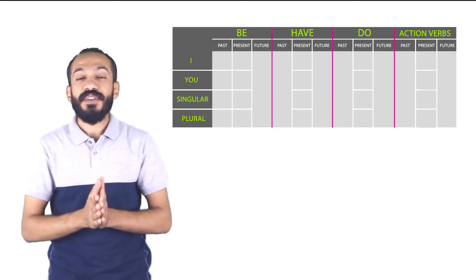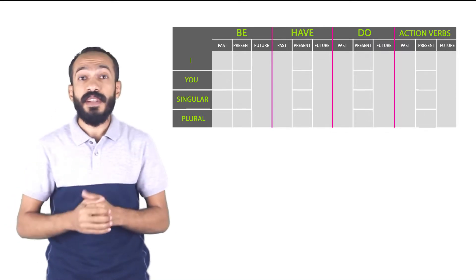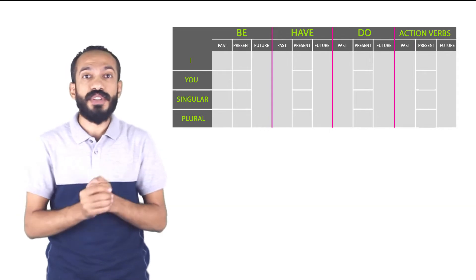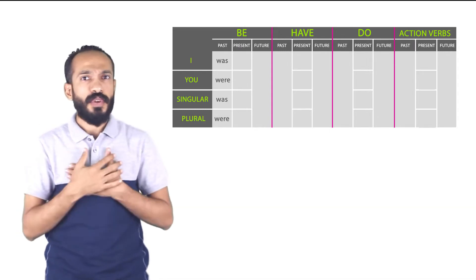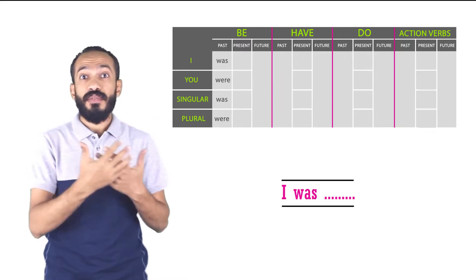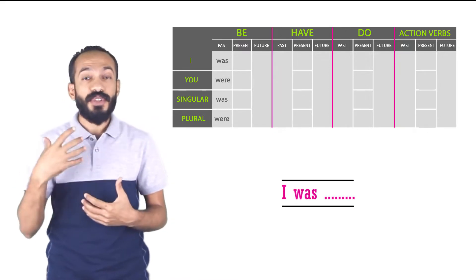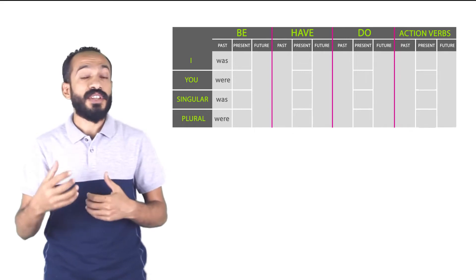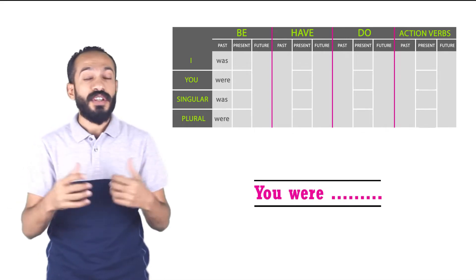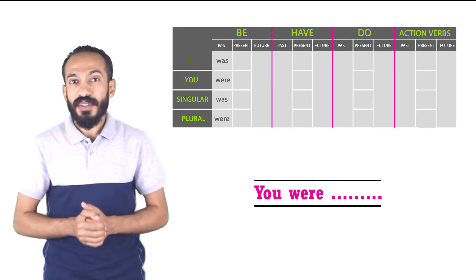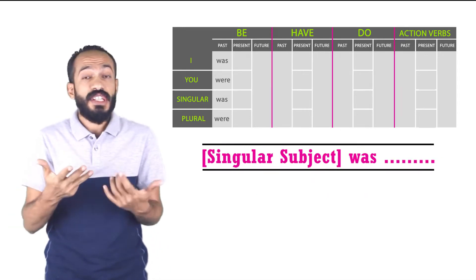We're going to get started with verb to be. In the past, if you want to use verb to be in the past, we're going to use two different words: was or were. When I talk about myself, I say 'I was.' When my subject is the pronoun you, then the verb is always 'you were.' If your subject is singular — that, this, he, she —